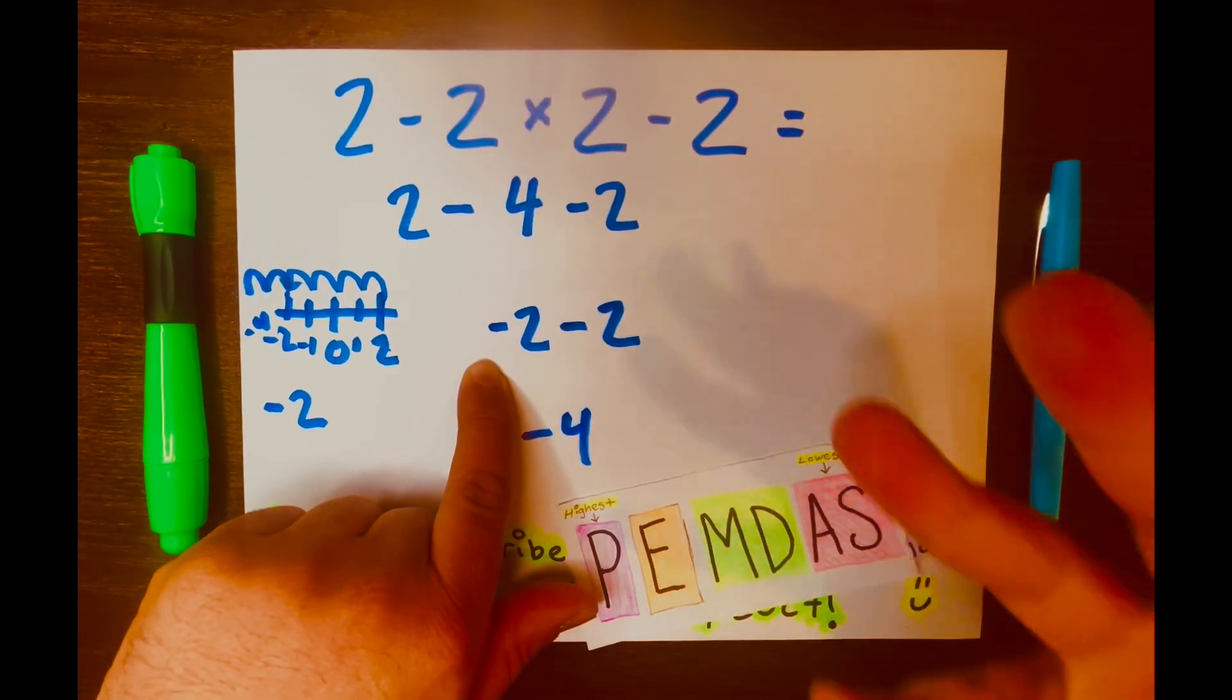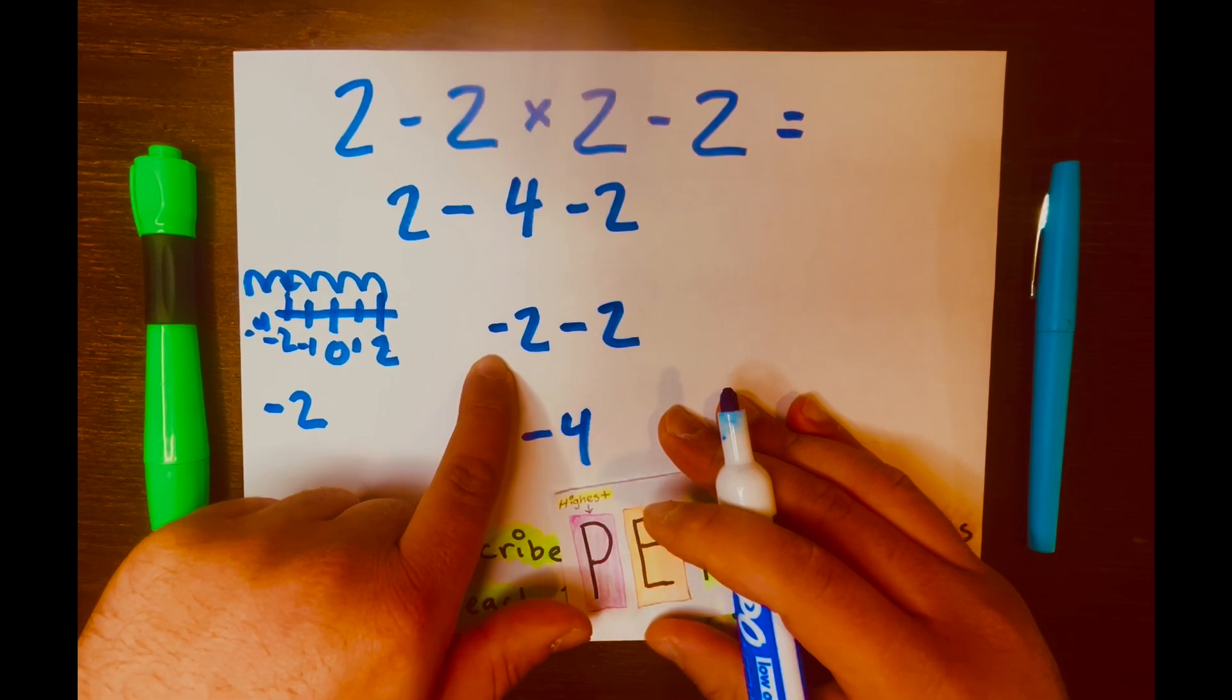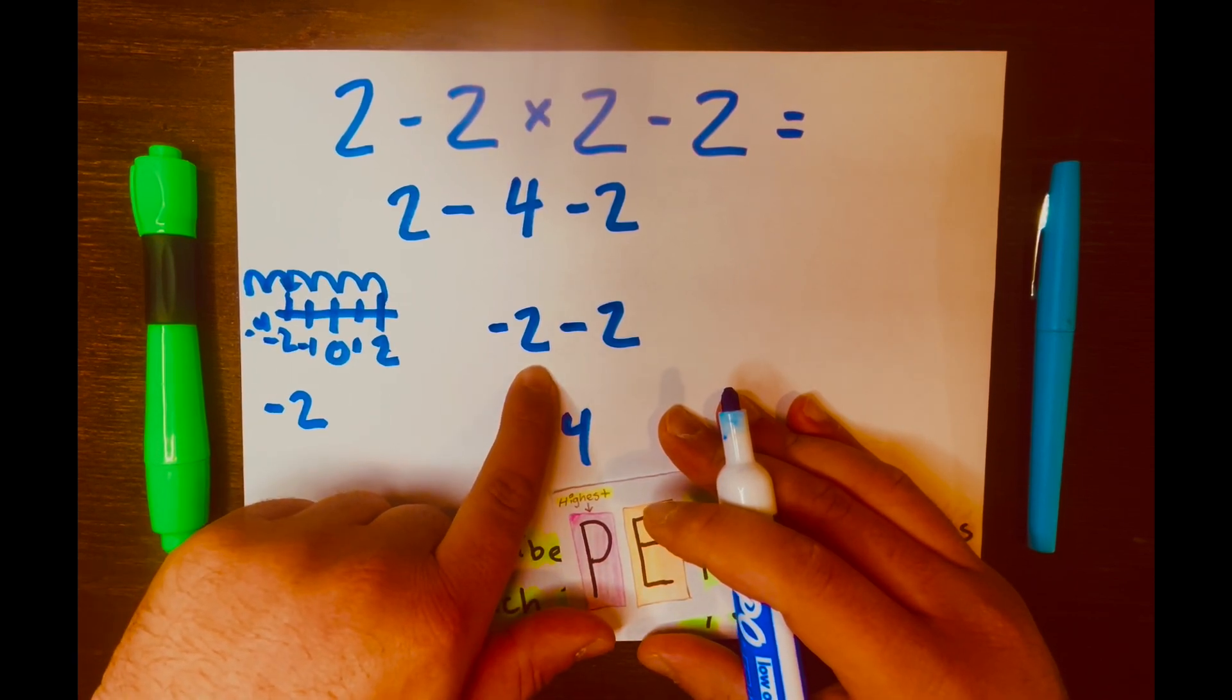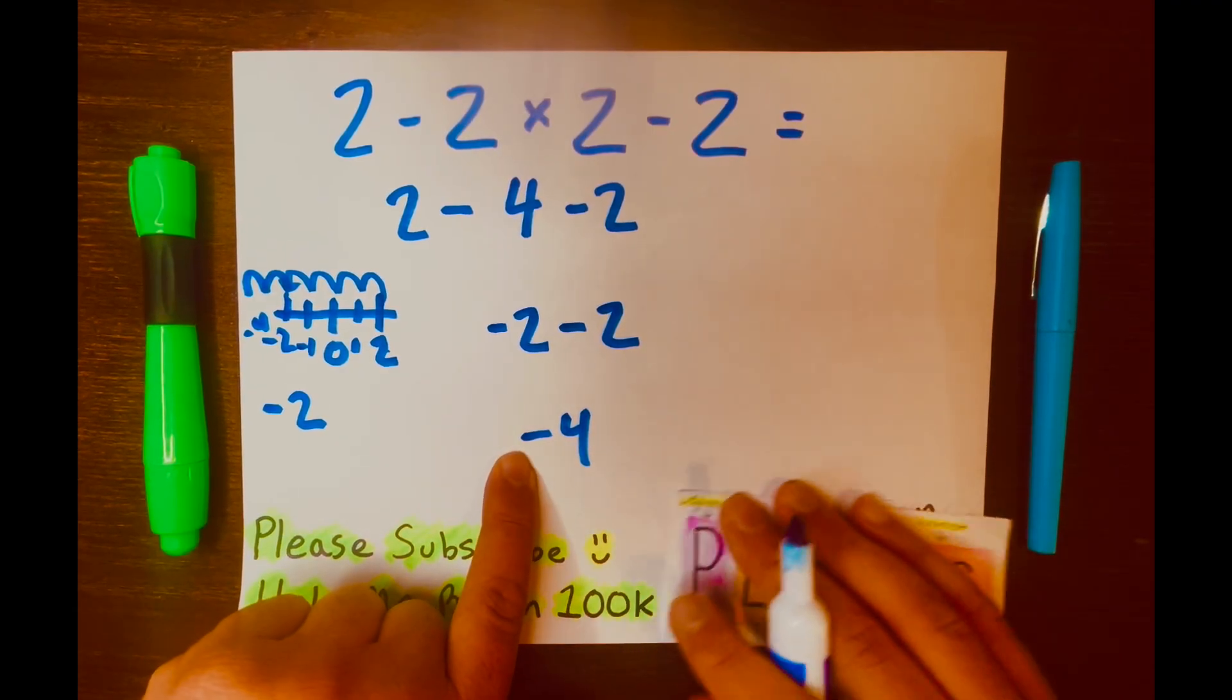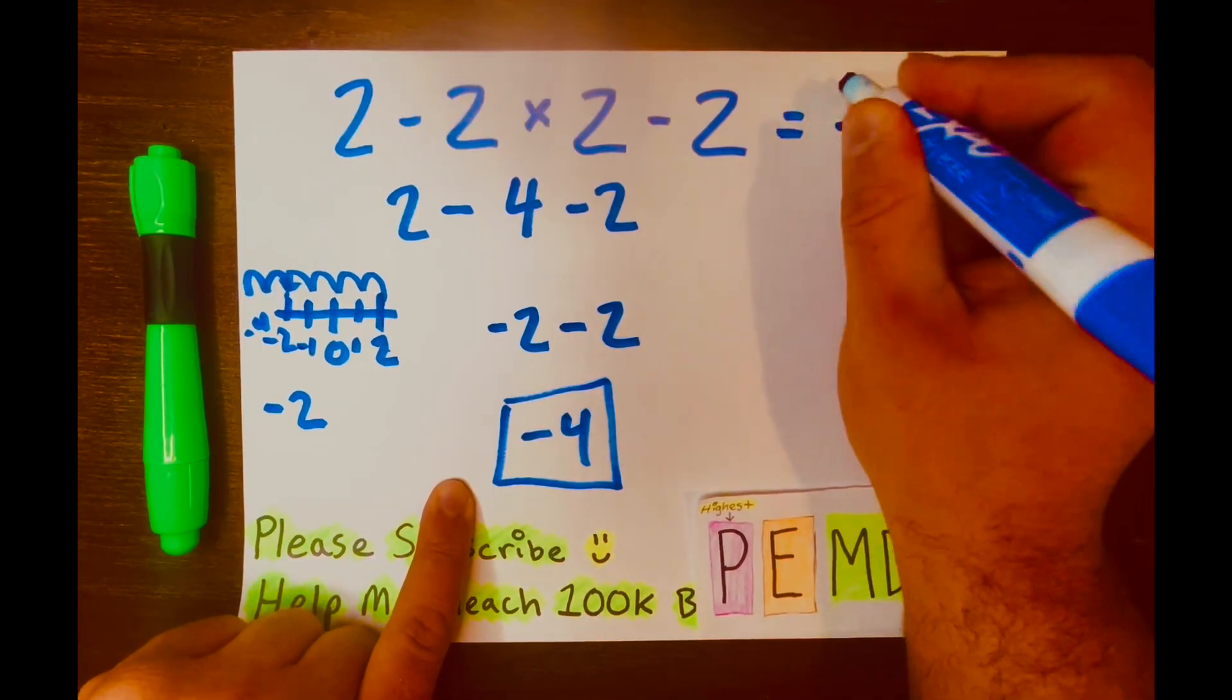Or you can think about the money scenario. So if you owe $2 and the person is asking for another $2, you'll be at negative $4. So that is your answer. And there you go.